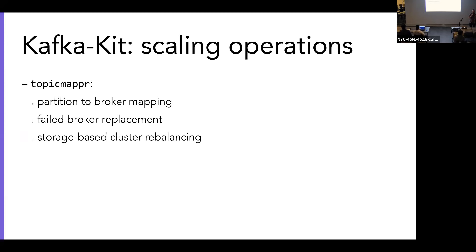So what is Kafka Kit exactly? It's a collection of different tools we use to manage our Kafka clusters. The first command is called Topic Mapper — we're not really creative with names, so it maps topics. It does partition-to-broker mapping. If you ever administer a Kafka cluster, one of the things you have to do sometimes — if you lose a broker, or scale up or down a cluster — you have to feed Kafka a JSON file saying which partition goes where. That JSON file generation is the crux of the problem.